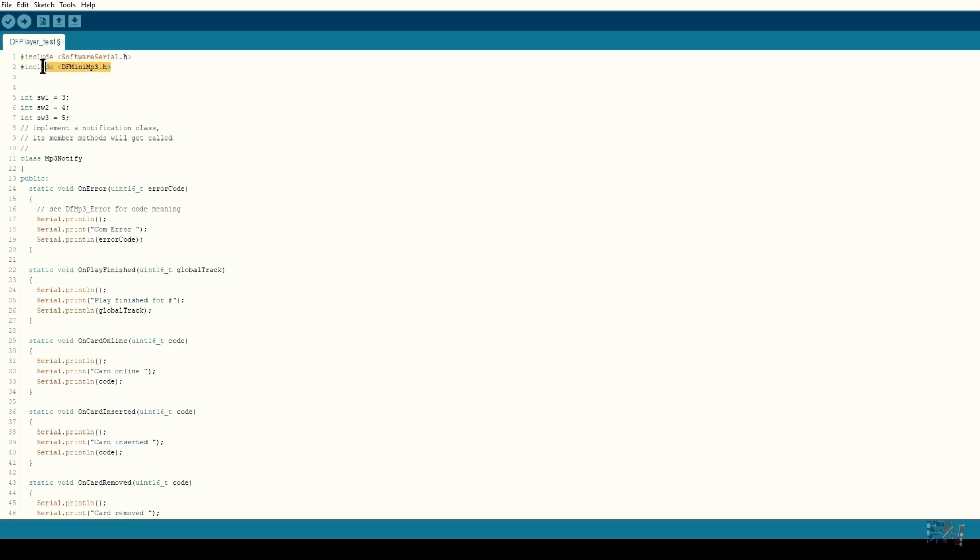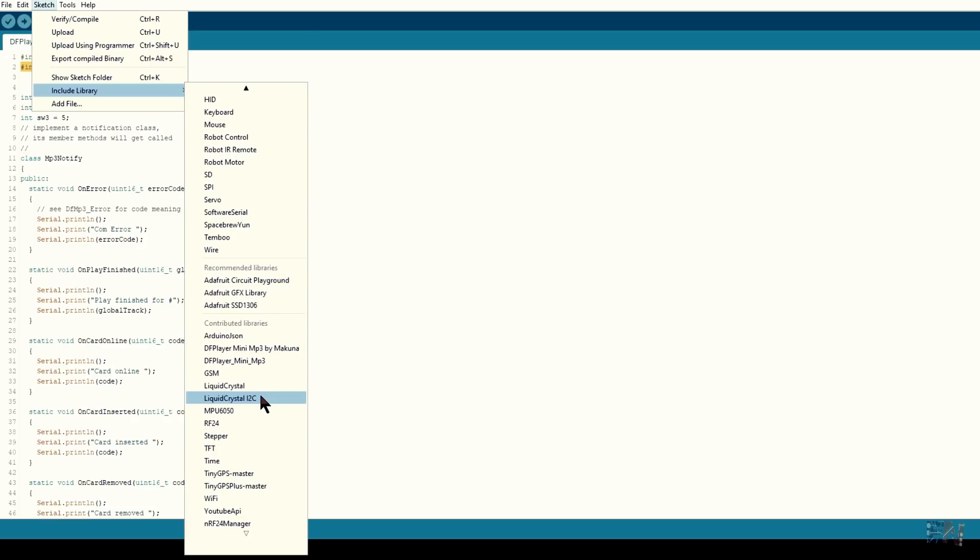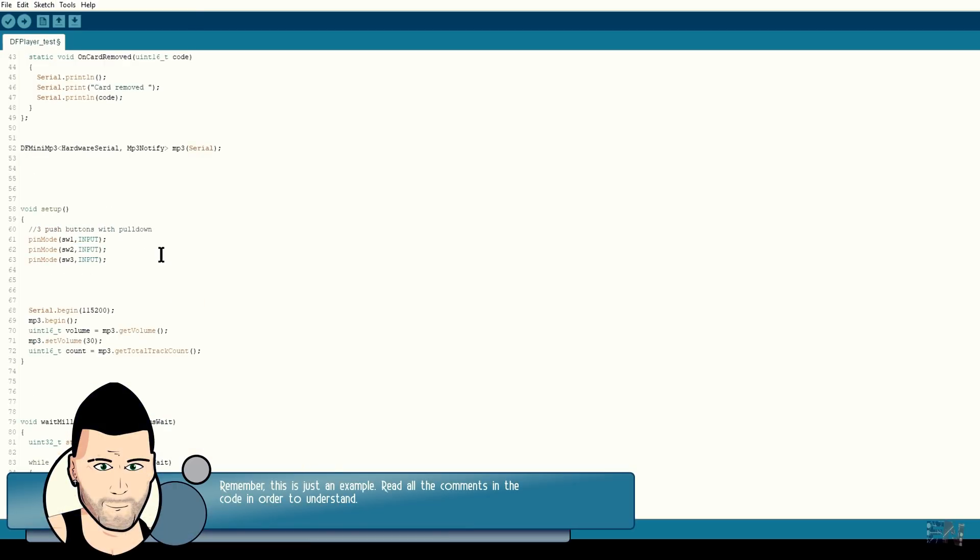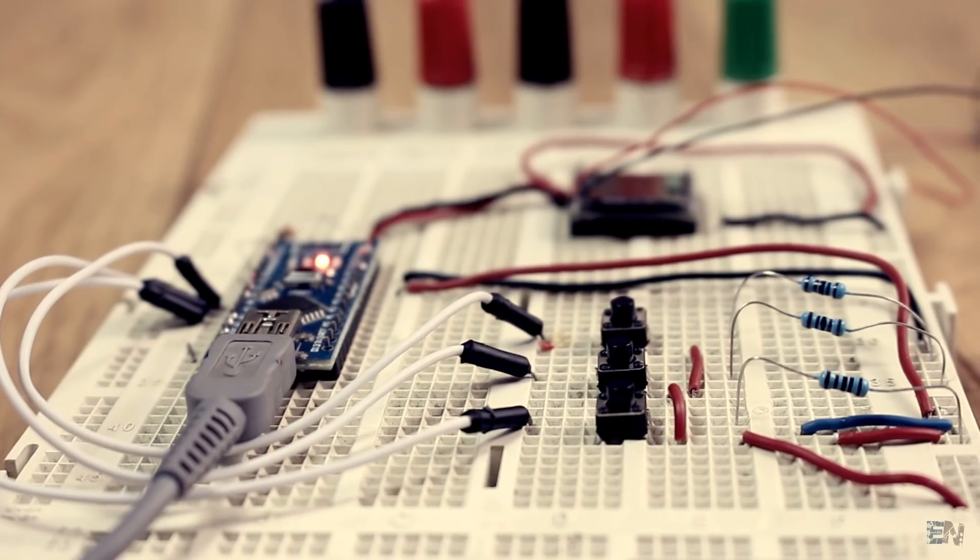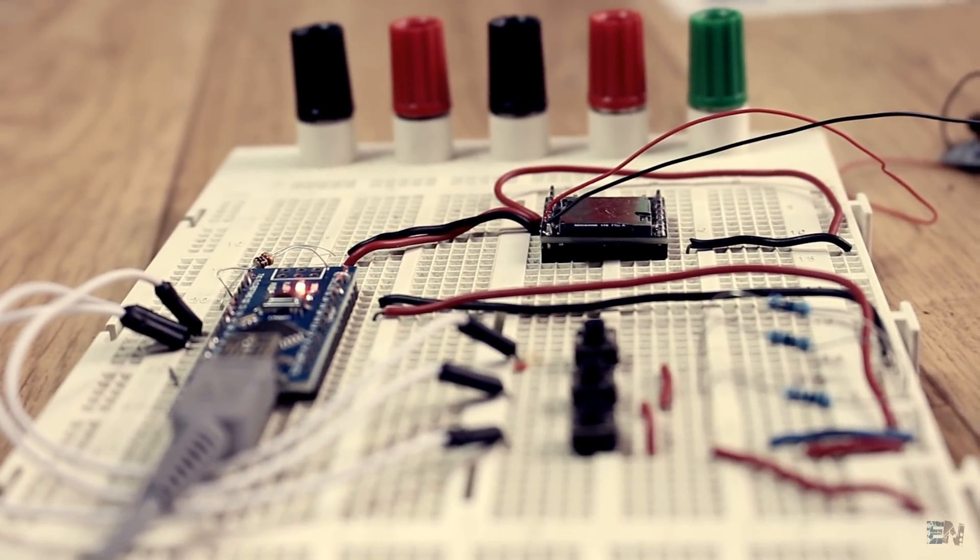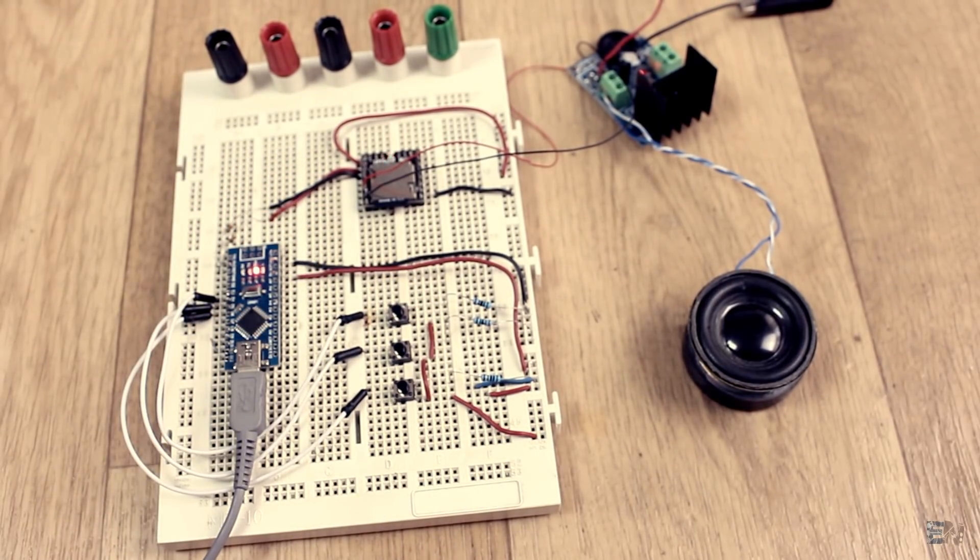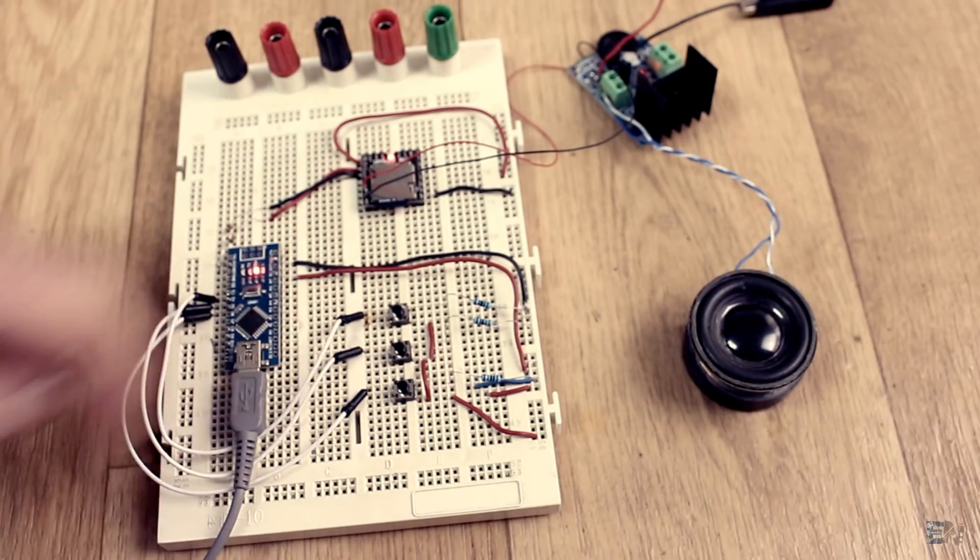First, we need to install the DF player library. Download it from a link below and install it to your Arduino IDE. In the setup loop, we define the pins for the push buttons and prepare the audio module. To play any sound, we have to use the playmp3 folder track function and select the file number, where track 1 represents the file 0000 on the SD card and so on. Each time I press a button, a different sound will play. Upload this example code and let's see the results. As you can see, for each button I've got a different voice.